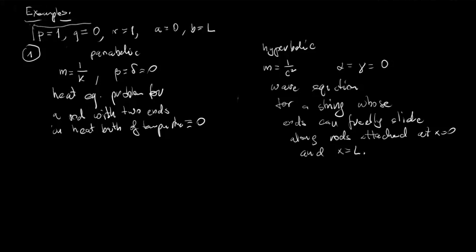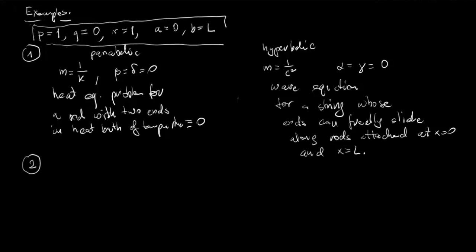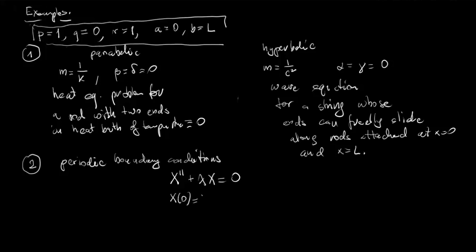If we keep the setting p = 1, q = 0, r = 1, a = 0, b = L, but now assume periodic boundary conditions, we end up with the Sturm-Liouville problem for the ODE X'' + lambda X = 0 with boundary conditions X(0) = X(L) and X'(0) = X'(L). This is a problem we haven't solved yet, so let's solve it now.